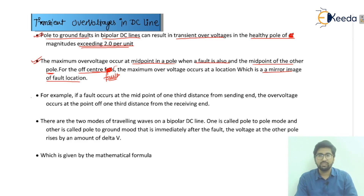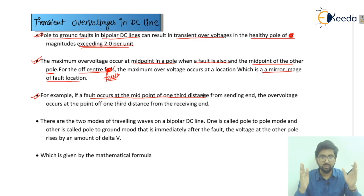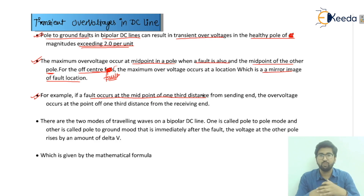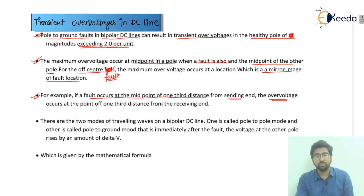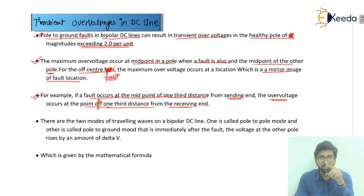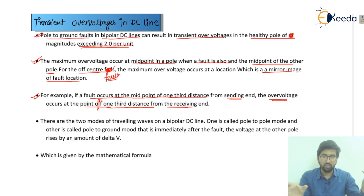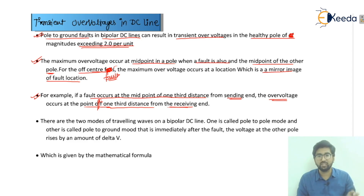Let us take an example: suppose we have a 100-kilometer line. If the fault occurs at one-third distance from the sending end, that is 33.33 kilometers from the sending end, then the overvoltage will occur at one-third distance from the receiving end, that is 33.33 kilometers from the receiving end. So it is actually the mirror image — whatever the distance is from the sending end, that same distance applies from the receiving end.